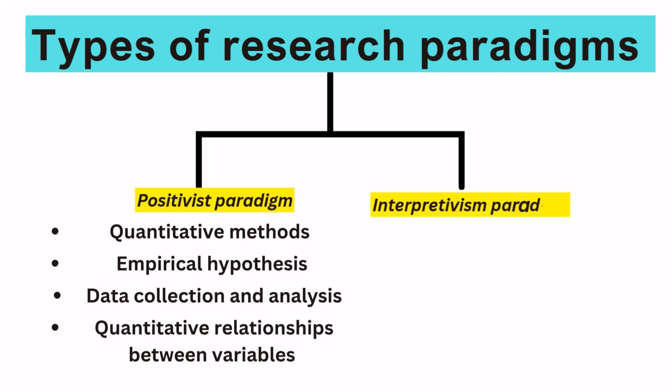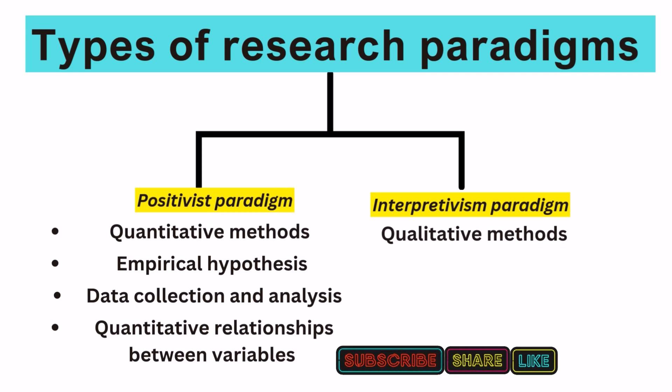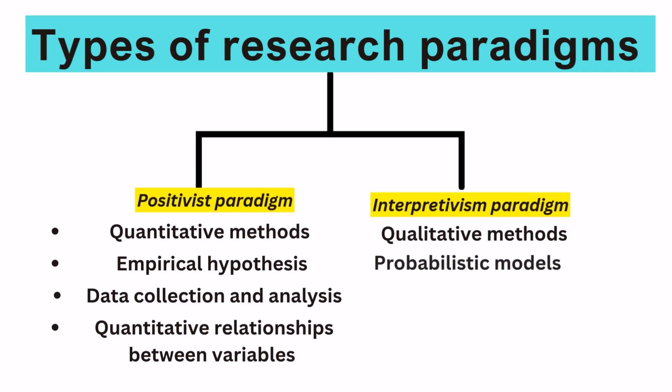Two, interpretivism paradigm. Interpretivists believe in the existence of multiple realities rather than a single reality. This is the research paradigm used by the majority of qualitative studies conducted in the social sciences. Interpretivism holds that because human behavior is so complex, it cannot be studied by probabilistic models, such as those used under positivist paradigms. Knowledge can only be created by interpreting the meanings that people put on behaviors and events.